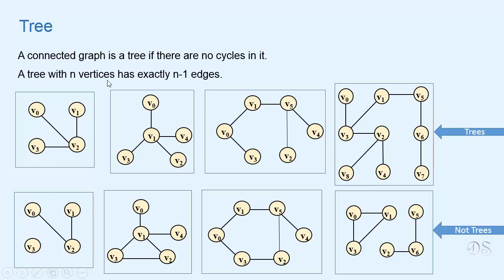Now a tree with n vertices has exactly n minus 1 edges. So in this tree we have 4 vertices and 3 edges. In this tree we have 5 vertices and 4 edges. In this tree we have 6 vertices and 5 edges, and in this tree we have 9 vertices and 8 edges.